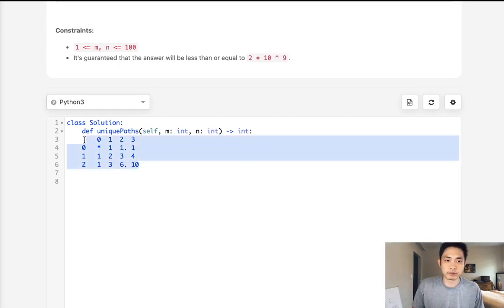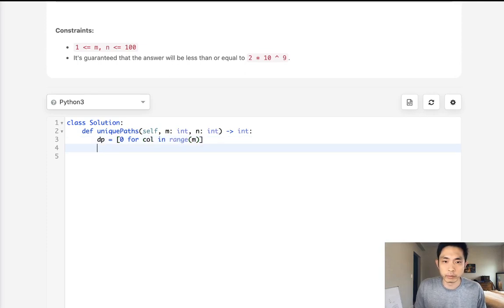Let's code that out. First, let's create our DP array. We're going to say, for column in range of M—we'll create a list of lists for row in range of M, which is the number of rows.